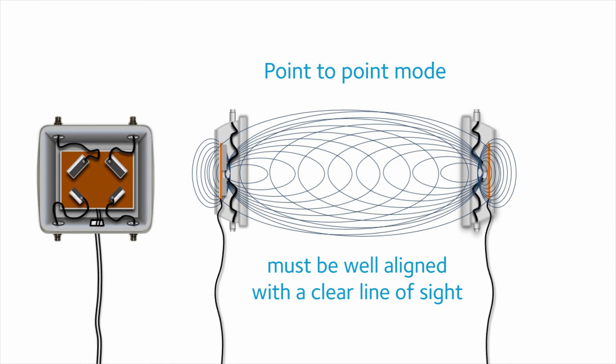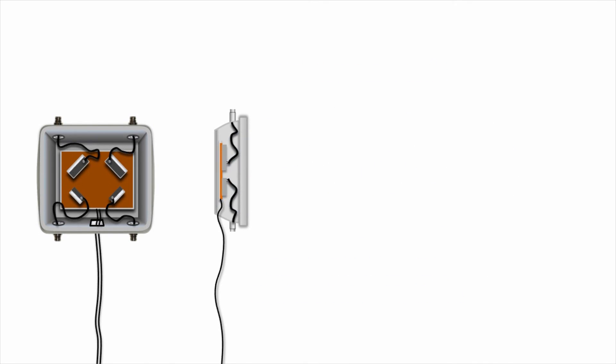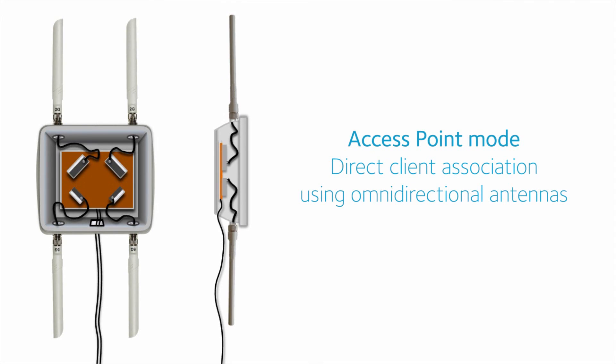There must be no obstacles and a clear line of sight. When using the omnidirectional antennas, the transmission will have less gain, but it will cover a more circular area.